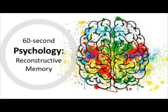Despite these positive applications of the theory, there are also weaknesses. For example, not all memories are impacted in these ways. If an event is personally significant to someone, they are more likely to remember it accurately, regardless of how it fits in our schema. The same applies to details that are so unusual they actually become more memorable, therefore weakening the idea of rationalisation.